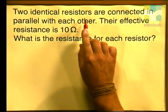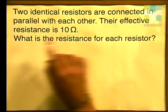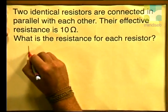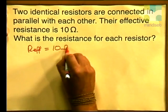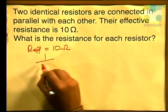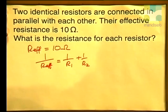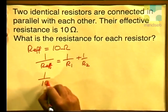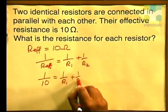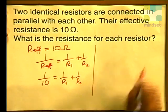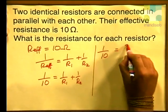Now let's try a last problem, using the concept of basic fractions to help us calculate our answer. Two identical resistors are connected in parallel with each other, and their effective resistance is 10 ohms. What is the resistance of each resistor? The effective resistance equals 10 ohms. Writing down our equation: 1 over R effective equals 1 over R1 plus 1 over R2. Substituting: 1 over 10 equals 1 over R1 plus 1 over R2. Since R1 and R2 are identical and using basic fractions, 1 over 10 must equal 2 over R.